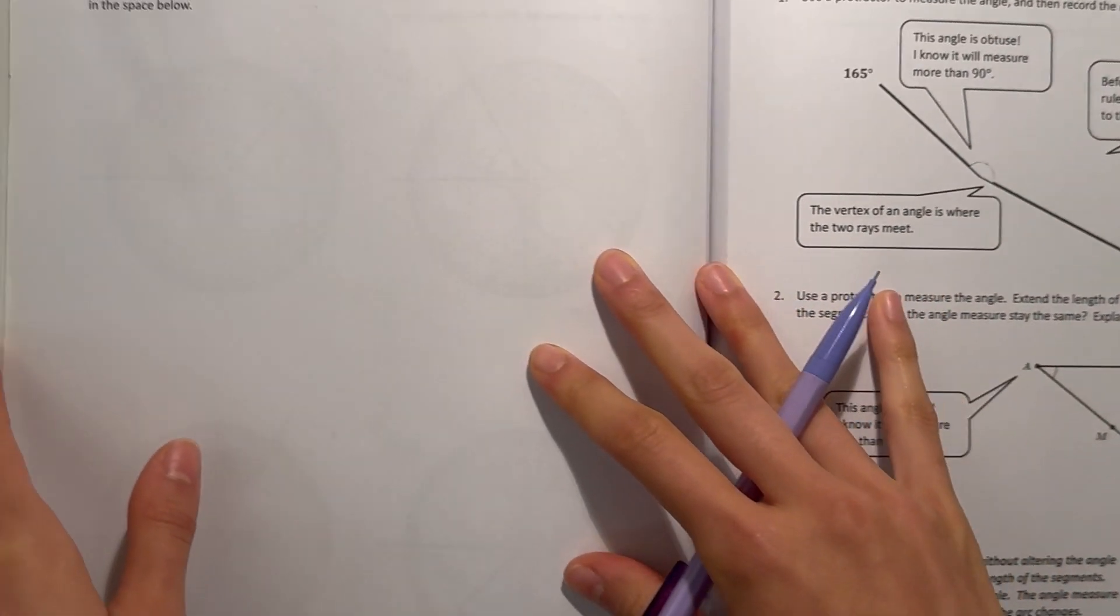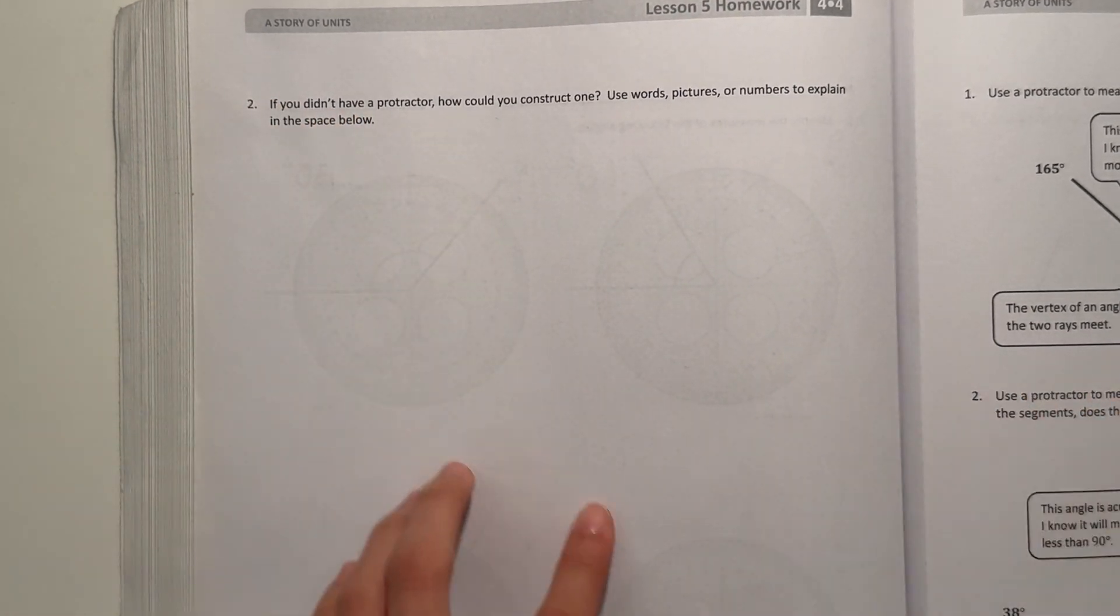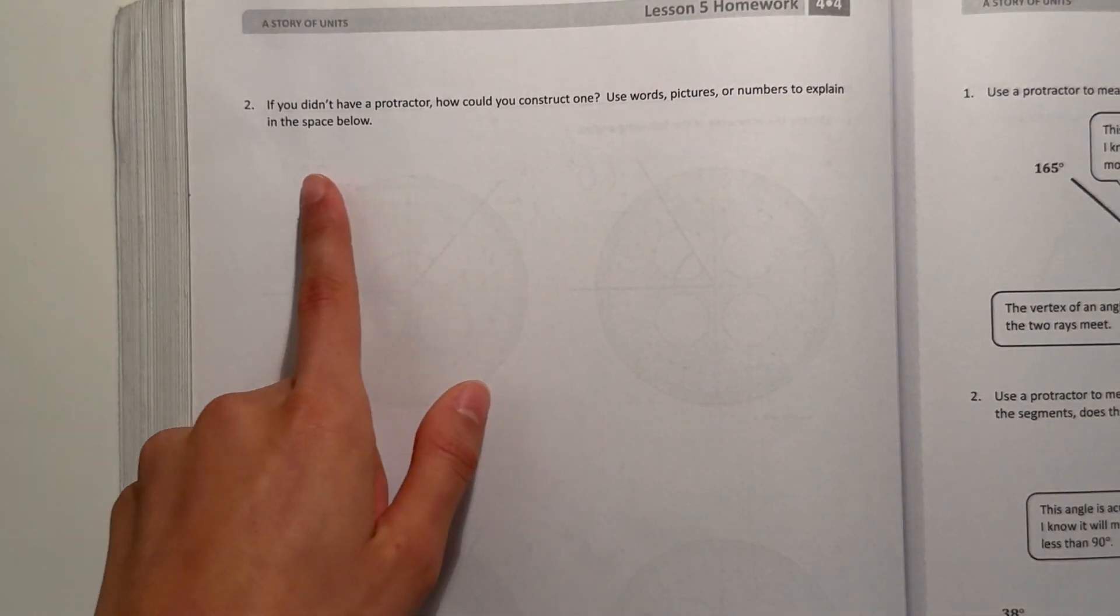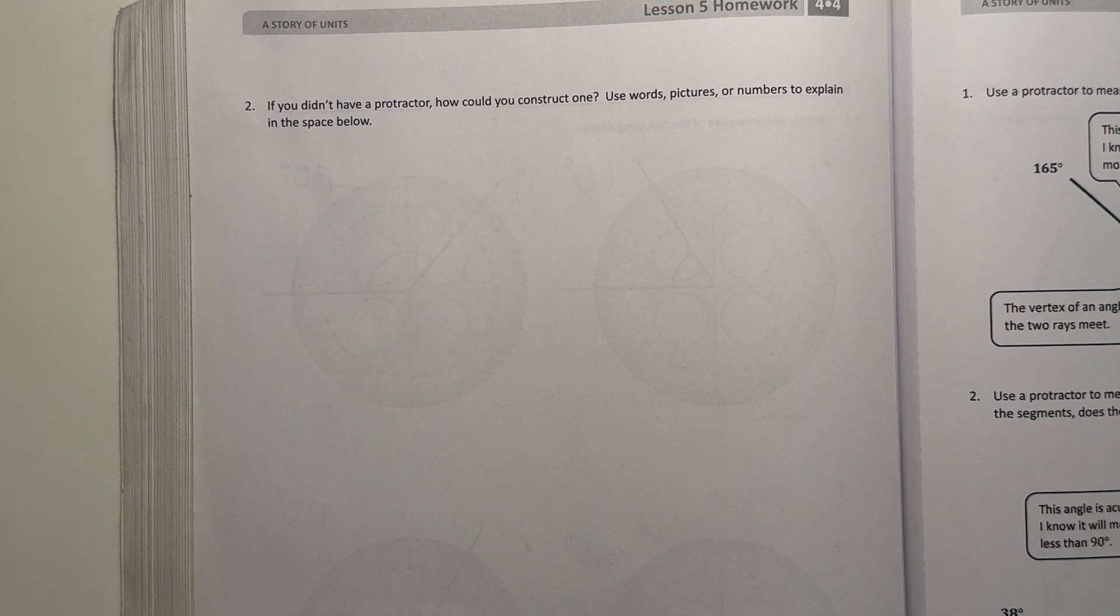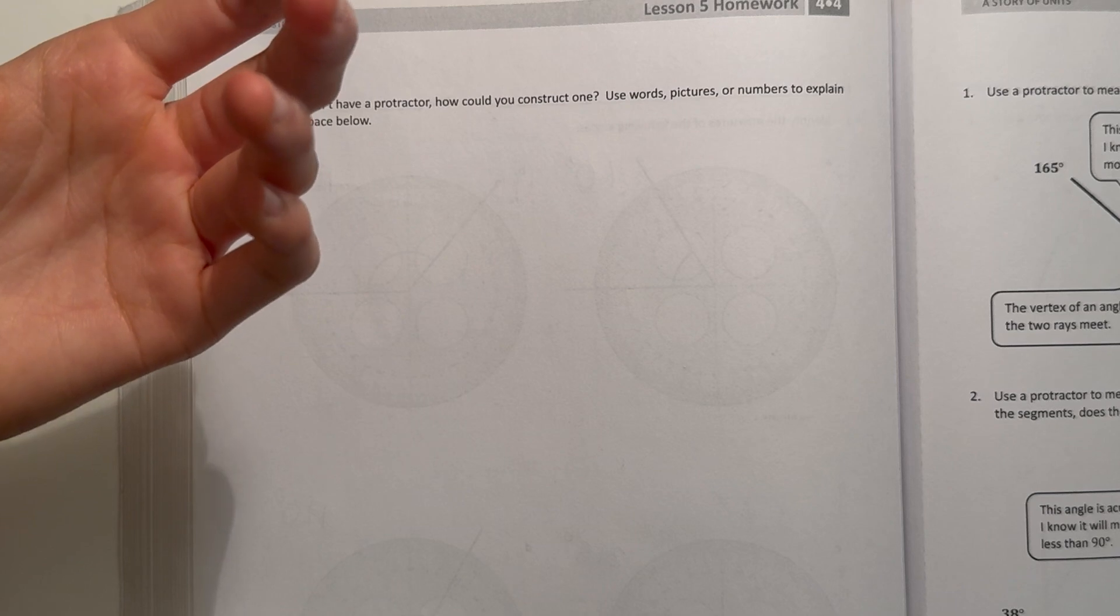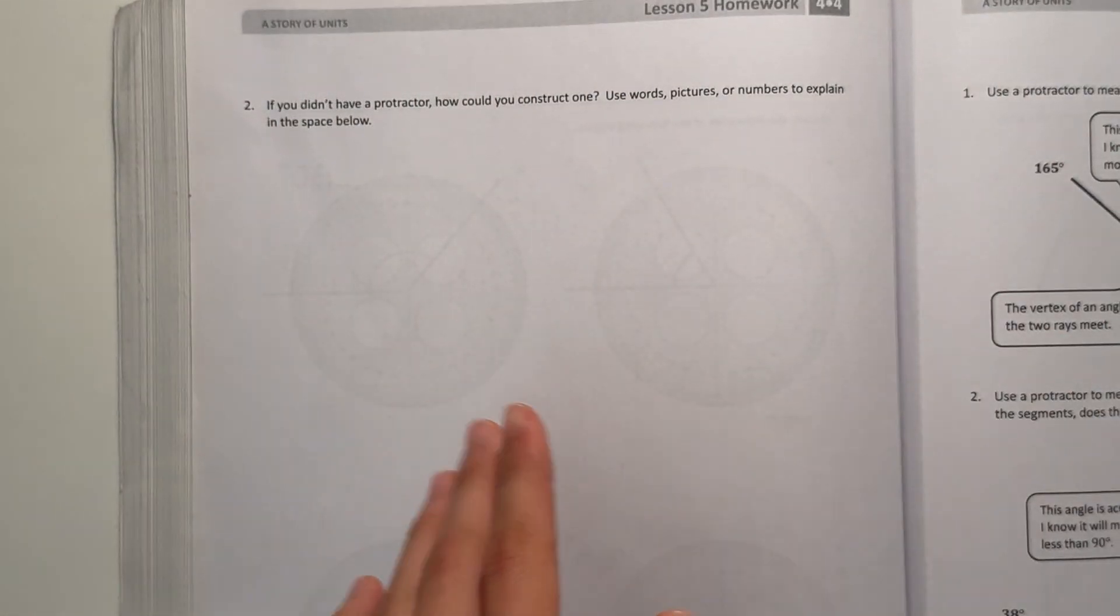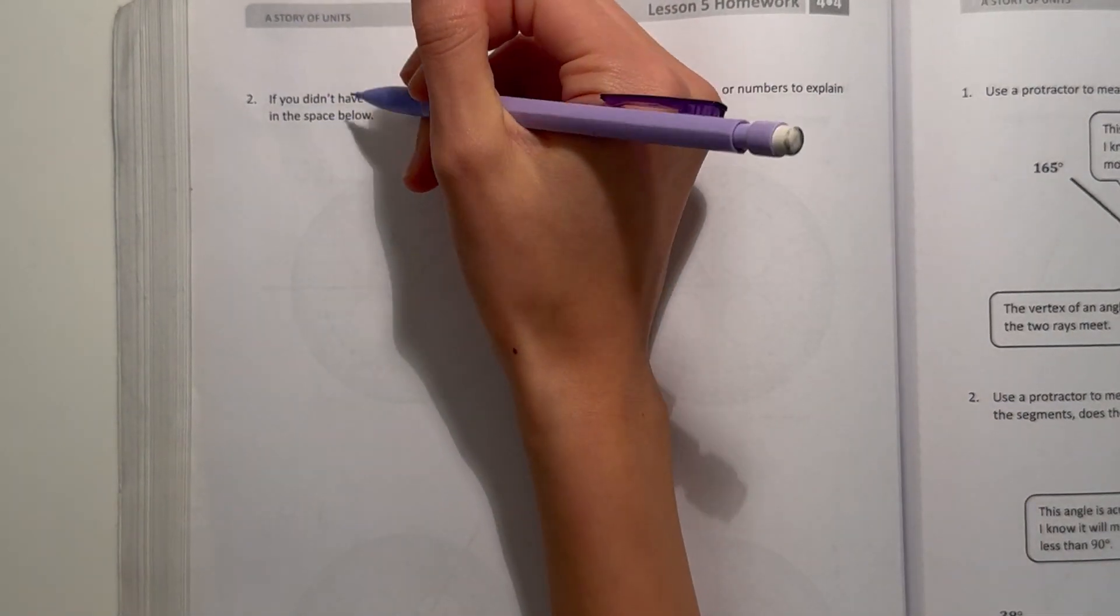All right, next page. This is our final problem, number two. If you didn't have a protractor, how can you construct one? Use words, pictures, or numbers to explain in the space below. Well honestly, if you don't have one, I'd say maybe you can like take a square and keep folding it until there's like the creases. When you fold something there's the creases, and then you can label them as your angles.